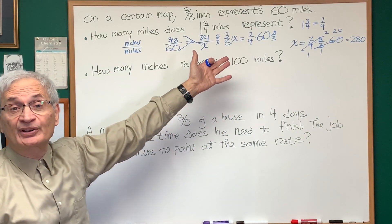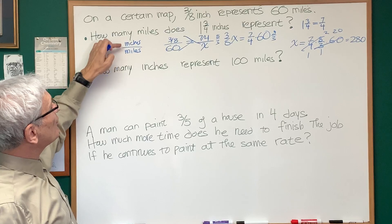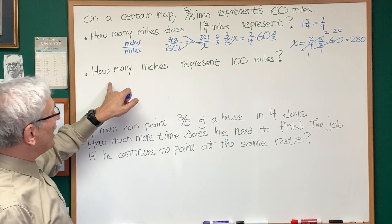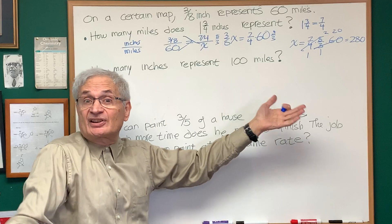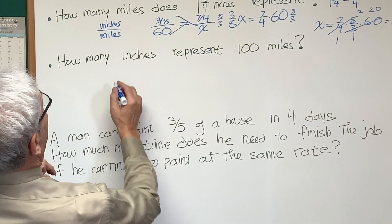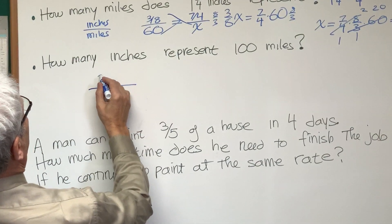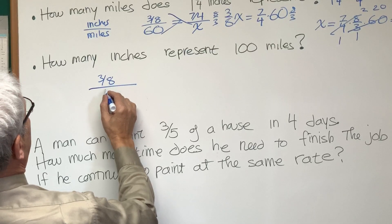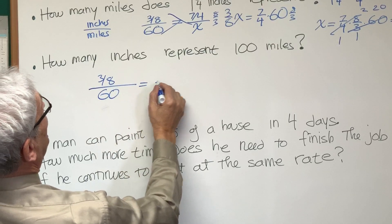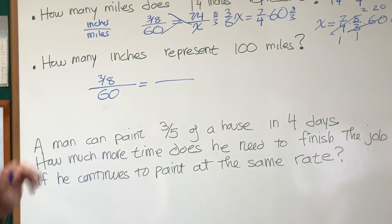Okay, so very straightforward. Once we've established this ratio, inches to miles. Second question: how many inches represents 100 miles? Same thing, inches to miles. We have, we're given that three-eighths of an inch represents 60 miles. This time, we're looking for the number of inches.